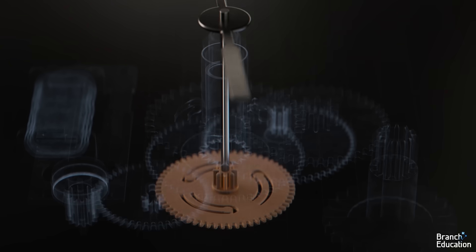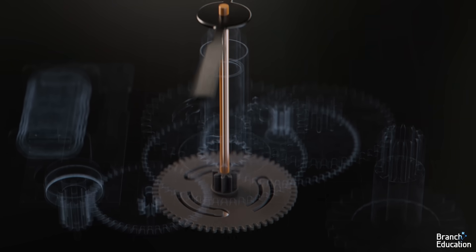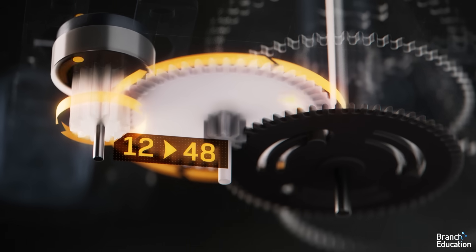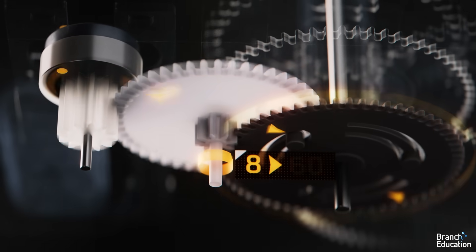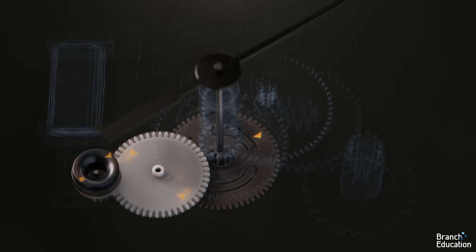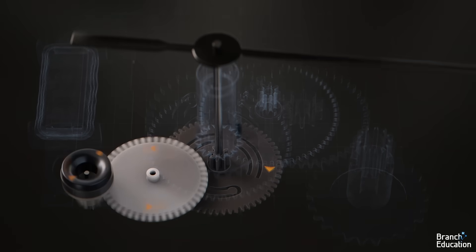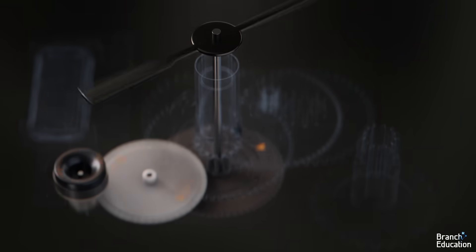To move the second hand, which is mounted on a shaft through the clock center, we go through a 12 to 48 gear reduction and then an 8 to 60 gear reduction, thereby reducing one revolution every two seconds down to one every 60 seconds.